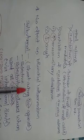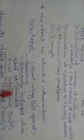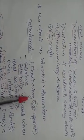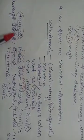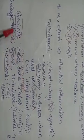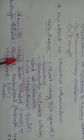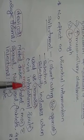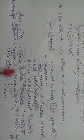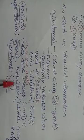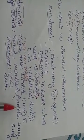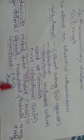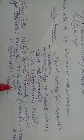Salbutamol selectively acts on beta-2 receptors, and this selectivity increases when it is given as an aerosol via the inhalational route. It can be given through a metered-dose inhaler at 100 to 200 micrograms, a metered-dose inhaler with a spacer, a nebulizer, tablets of 4 mg or 8 mg, or in injectable form via the subcutaneous route.